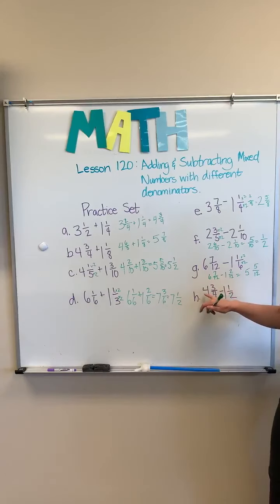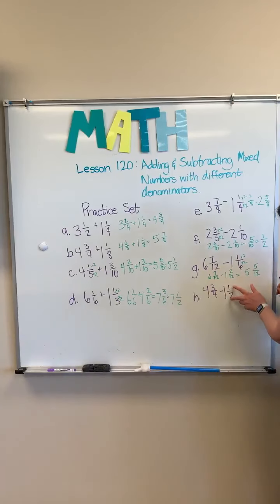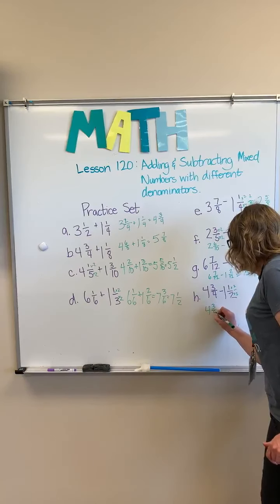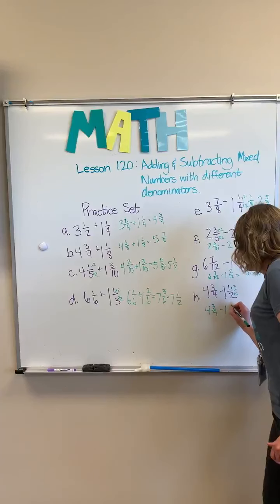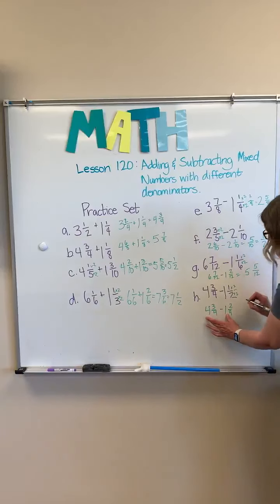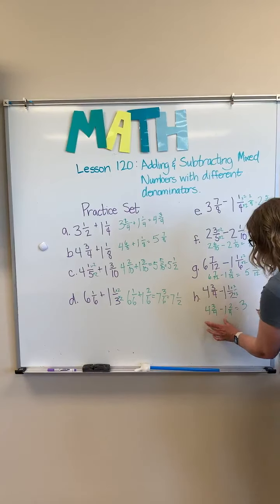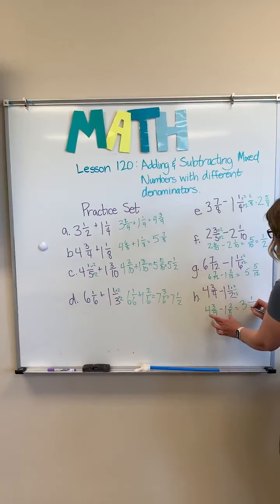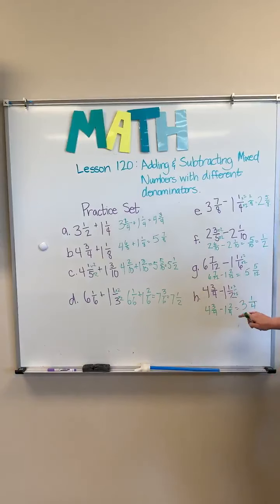Four, finally. Last but not least, four and three fourths minus one and a half. This is the fraction I'm going to change, multiplying it by two, multiplying it by two. So we have four and three fourths minus one and two fourths. Four minus one is three. Three minus two is one. And our denominator is four. So our answer is three and one fourths.